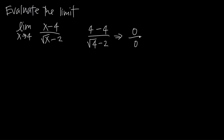The next thing you always want to try is factoring. But we can see right away there's no way to factor this to simplify it — it's not like we have a polynomial in the numerator and denominator that we can factor and cancel. So factoring isn't going to work. If both substitution and factoring don't work, the next thing to try is often the conjugate method.